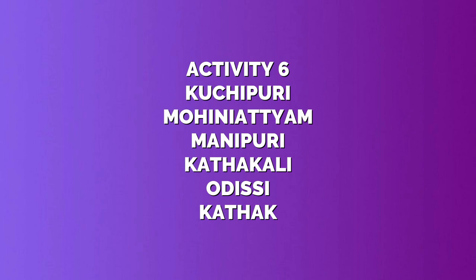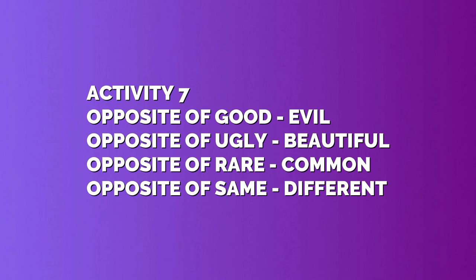In Activity 7, write the opposites of the words given in the clues — you can find the answers in the text. Down: opposite of same. Across: opposite of good, opposite of ugly, opposite of rare. The answers are: opposite of good is evil; opposite of ugly is beautiful; opposite of rare is common; opposite of same is different.